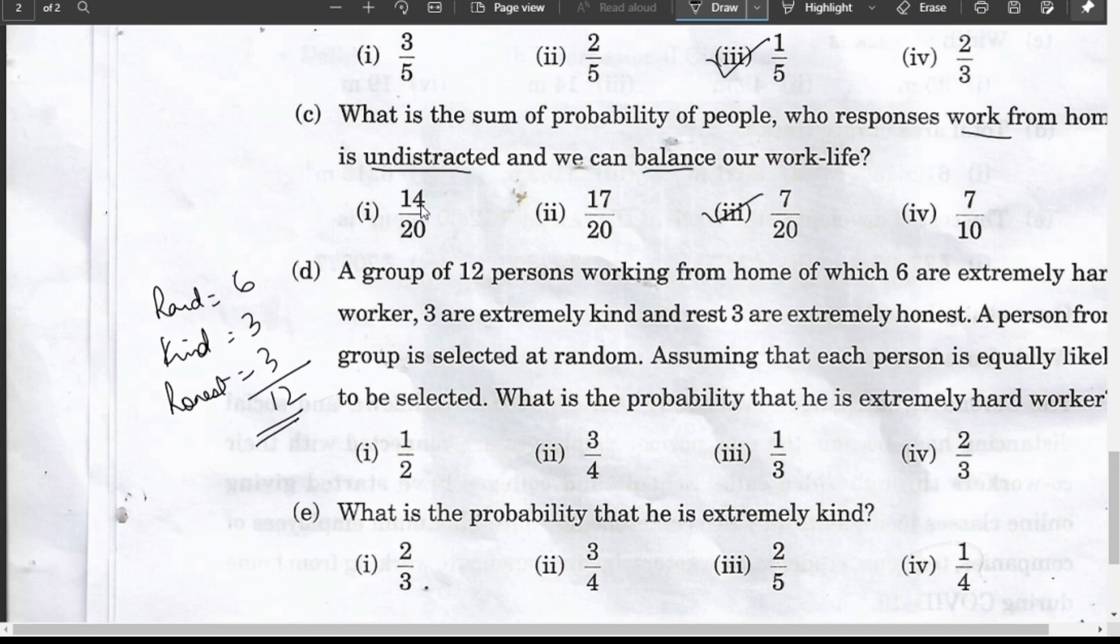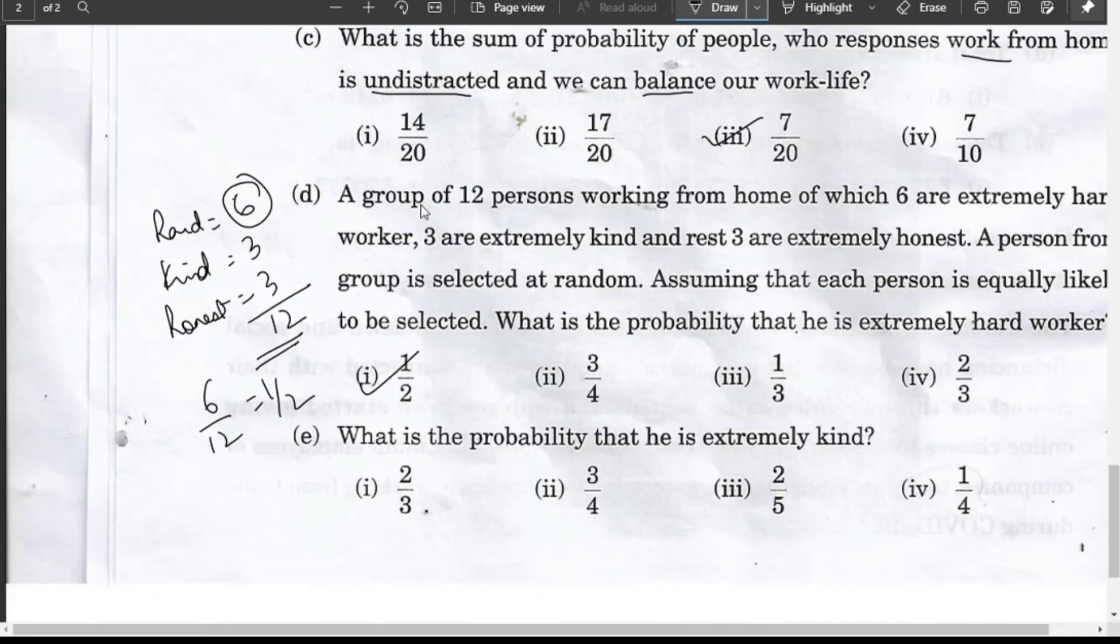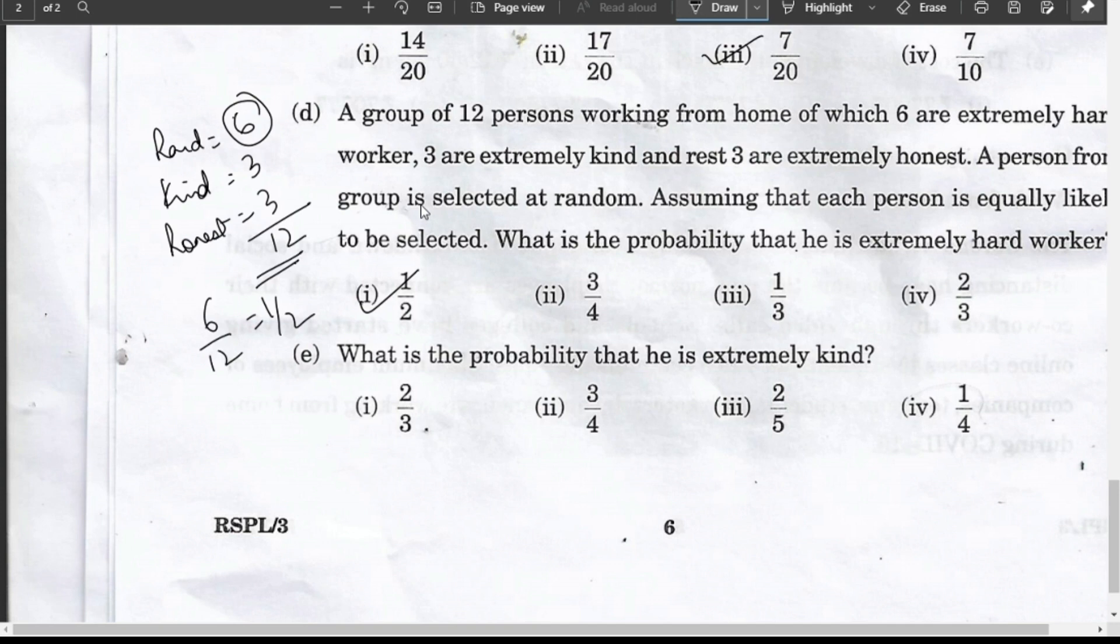Extremely hard worker: 6 divided by total 12, that is 1/2. Question (e): What is the probability that he is extremely kind? 3 by 12, that is 1/4. These are straightforward problems.